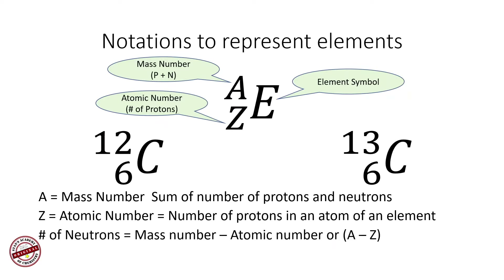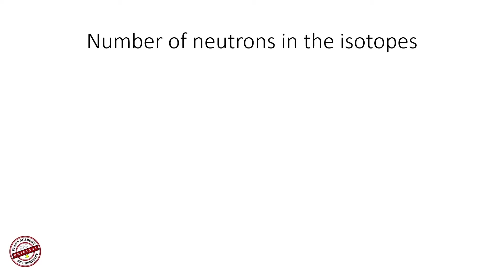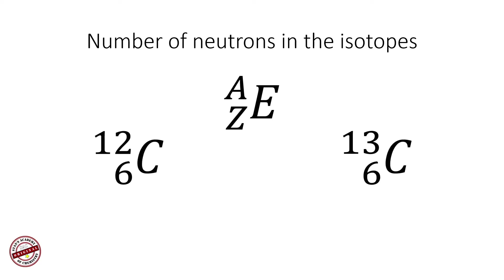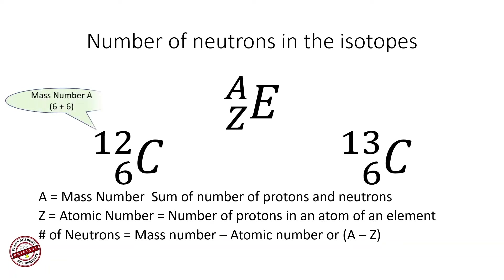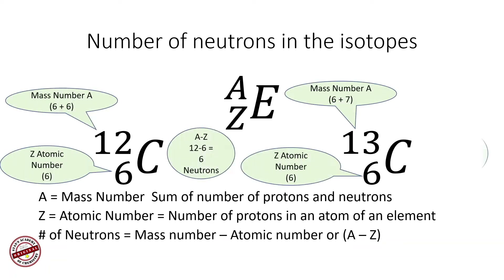A represents the sum of the number of protons and neutrons; Z represents the atomic number, the number of protons in an atom. To calculate the number of neutrons, you subtract Z from A — mass number minus number of protons gives you the number of neutrons. We have calculated the number of neutrons for the two isotopes of carbon: carbon-12 and carbon-13.